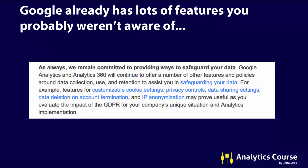The next part of the email is basically Google saying they've already done a lot of stuff for you. They have all these features that you're probably not using, like customizable cookie settings, privacy controls, data sharing settings, data deletion on account termination, and IP anonymization. We talked about these in analytics course, but there are certain cases where not everybody needs to use them. So you might decide that now is the time to start using these things to become compliant with GDPR.